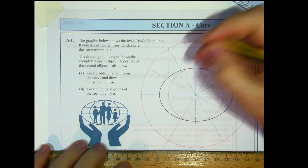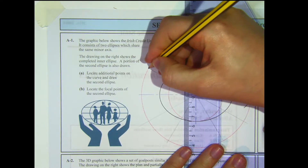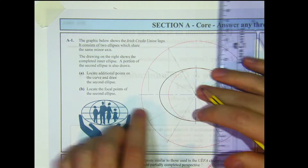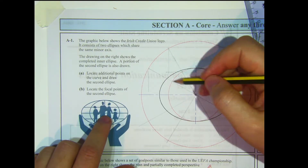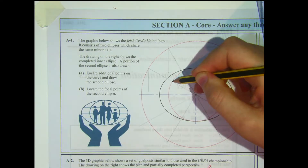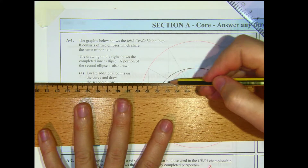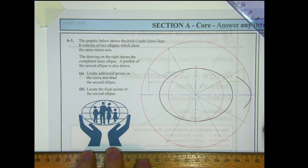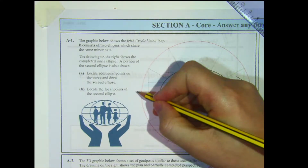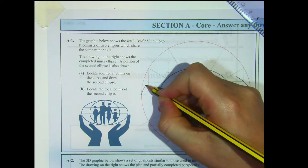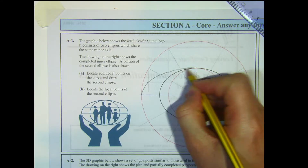Moving to the next point. This line now cuts the major auxiliary circle. Perpendicular to the major axis gives a vertical line. That same line cuts the red minor circle, and going perpendicular to the minor axis from that point gives me a second point on the curve. So there are two points on the curve, and we can draw in that section.